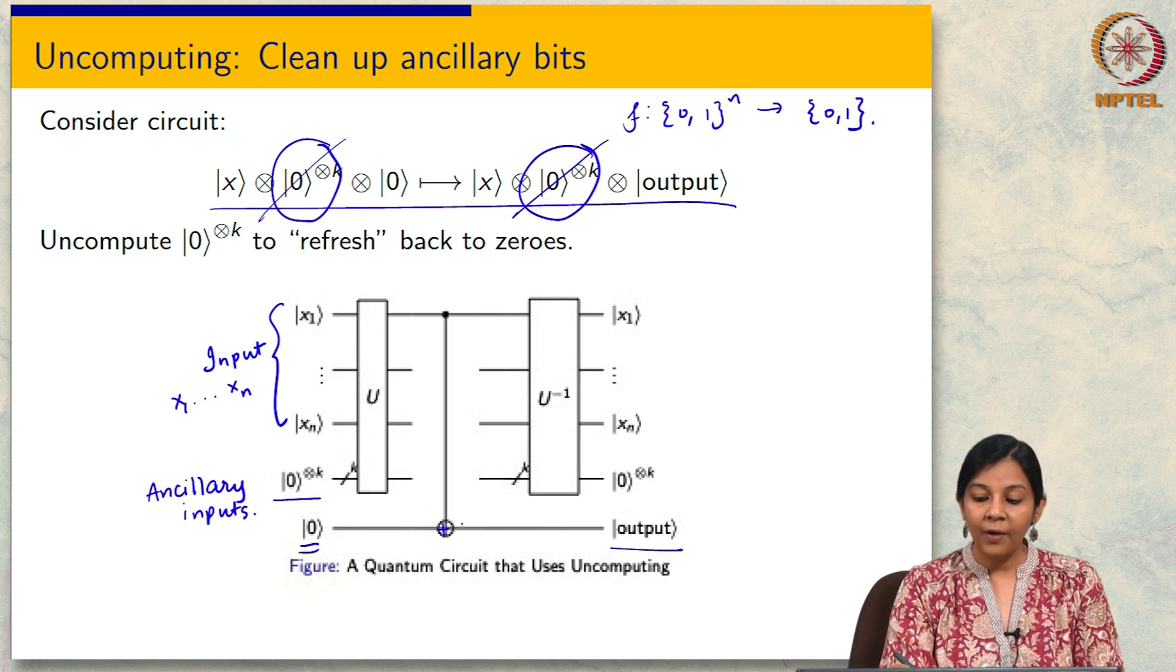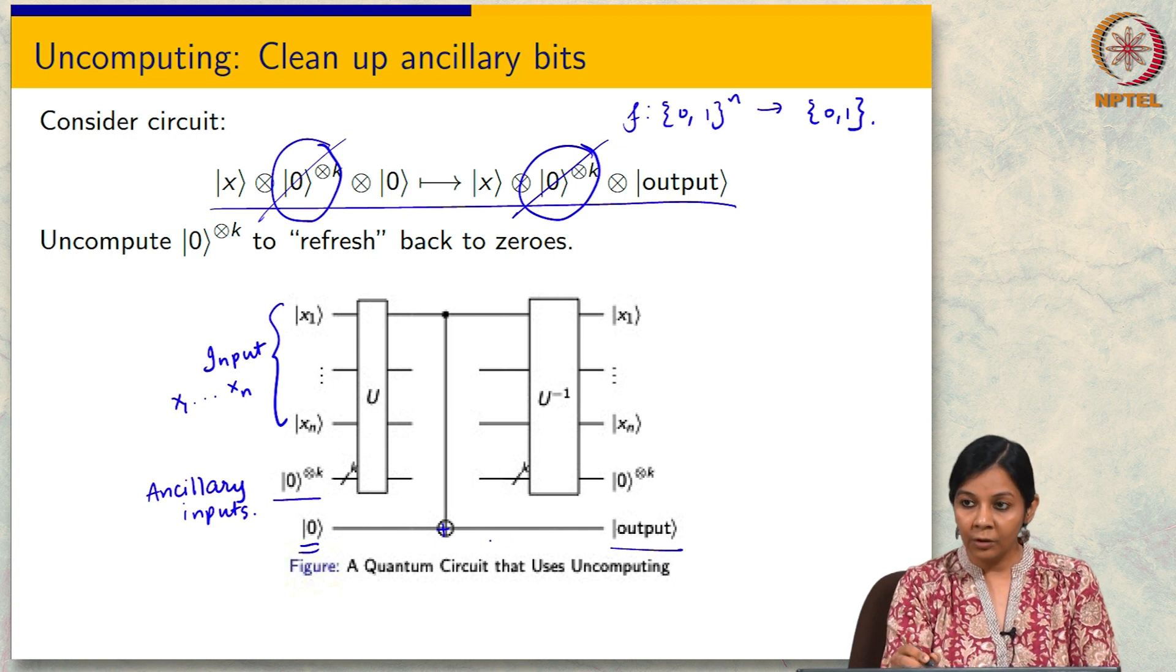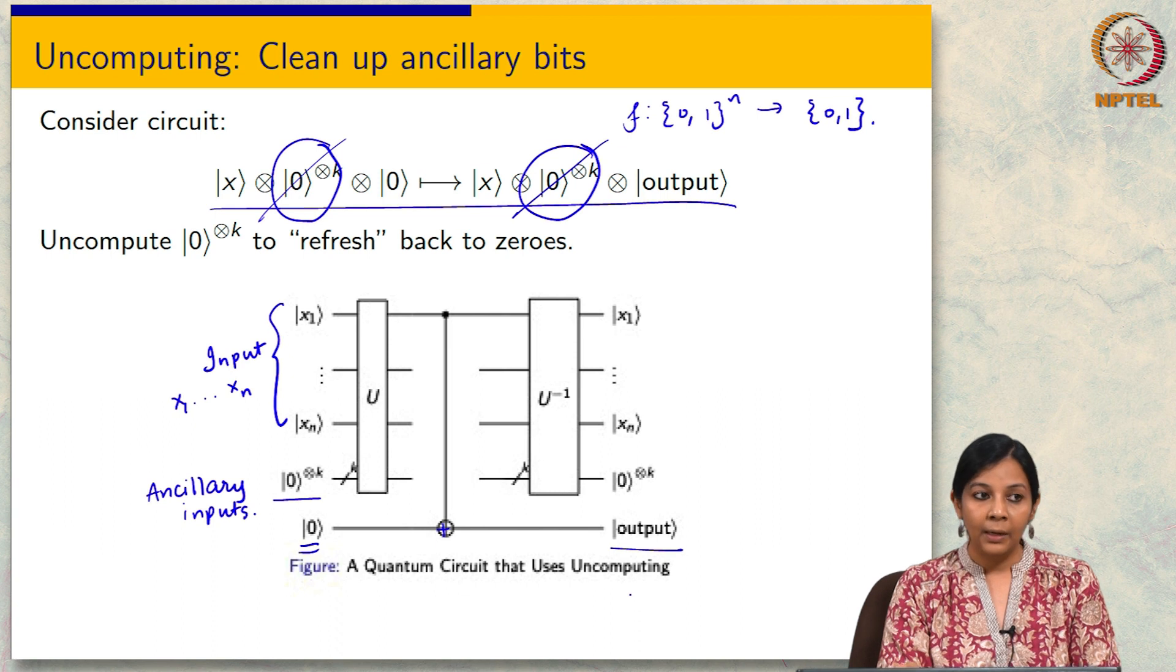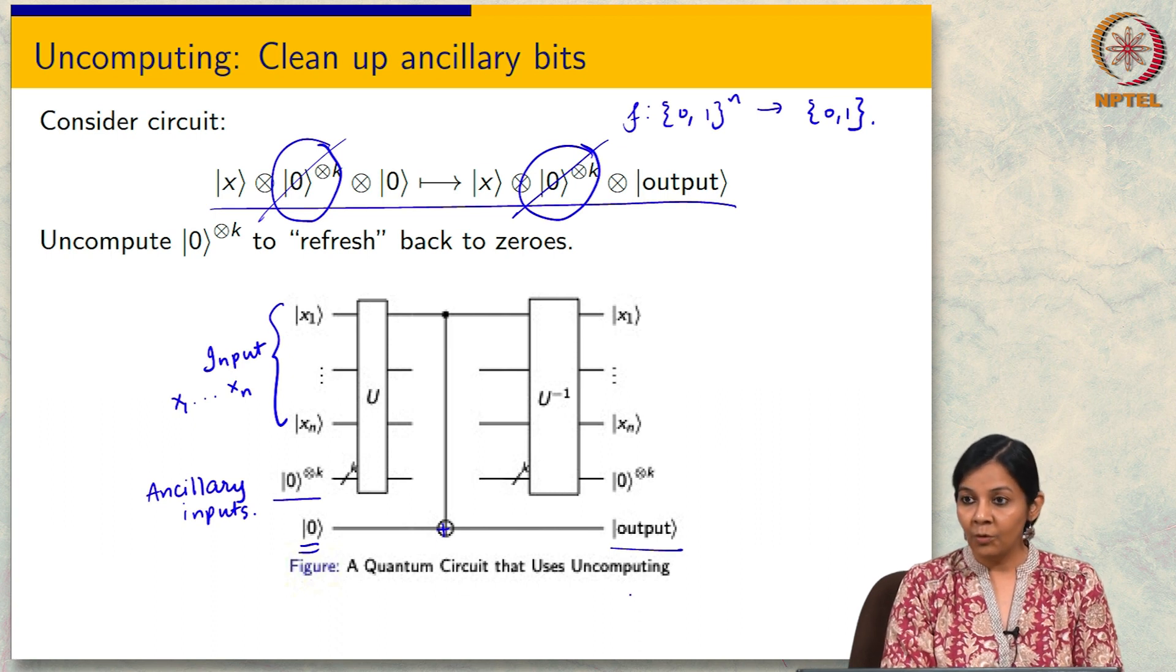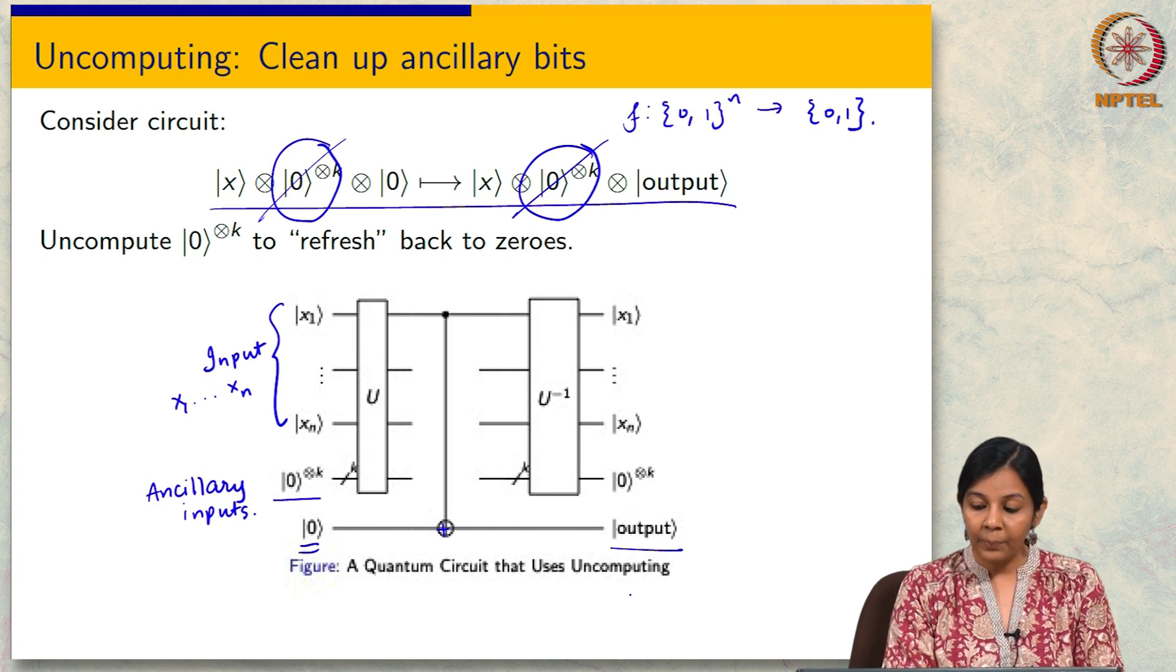Finally, at the end of the computation I am using this C-NOT gate to copy the output to this wire. I hope that makes sense to everyone how I am going to copy the output. If my f(x) is 0 then I will get 0 in the output because the control bit will be set to 0. If it is 1 then it will flip the 0 over here, then I will get 1.